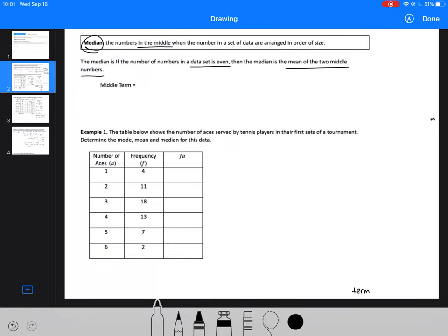Our next term is median, which is the number in the middle when the numbers in a set of data are arranged in order of size. If the number of numbers in a data set is even, the median is the mean of the two middle numbers.